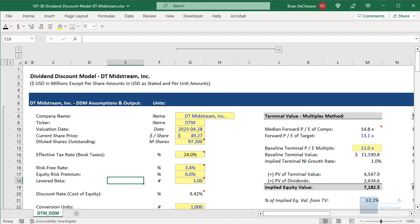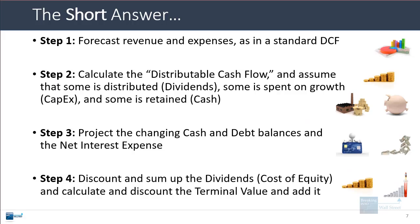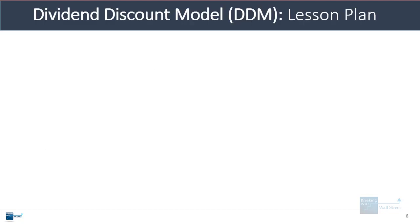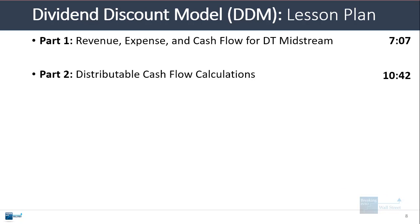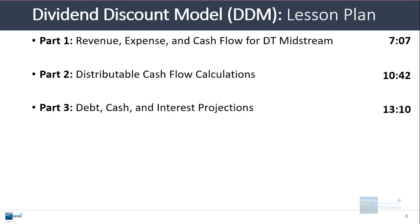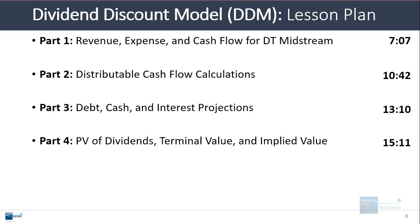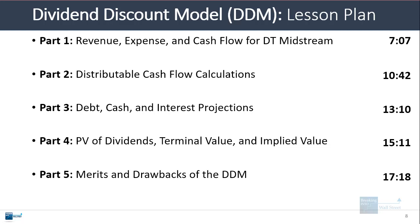Those are the basic steps involved in setting up a dividend discount model. The plan here is to start with the revenue, expense, and cash flow projections for DT Midstream, then go into the distributable cash flow calculations, then look at the debt, cash, and interest projections, then go through the present value of dividends, the terminal value, and the implied value. Finally, we'll discuss the merits and drawbacks of the dividend discount model and whether it is actually reliable in this case.